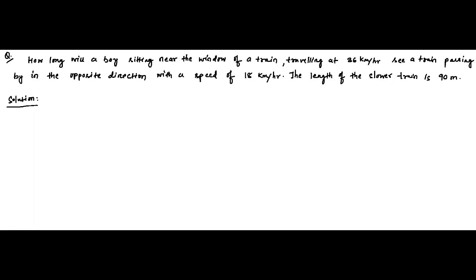Here is another question. It has been given that a boy is sitting near the window of a train traveling at 36 kilometers per hour. Another train passes by in the opposite direction with a speed of 18 kilometers per hour. It has been asked: for how much duration will the boy sitting in the faster moving train see the slower moving train passing by? The length of the slower train traveling at 18 kilometers per hour is 90 meters.